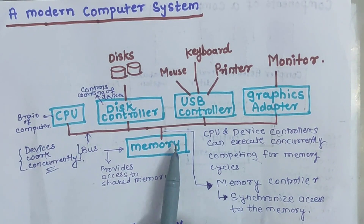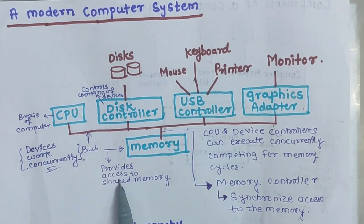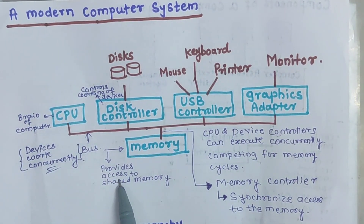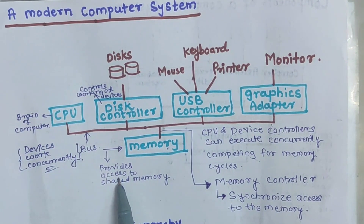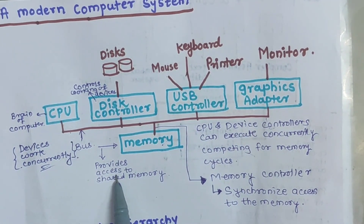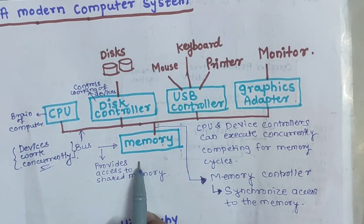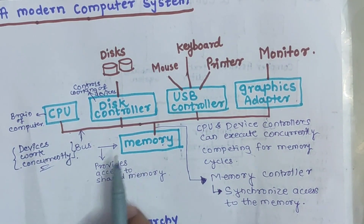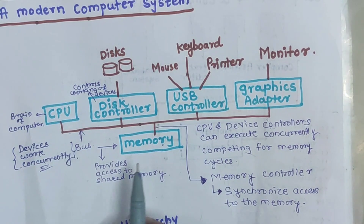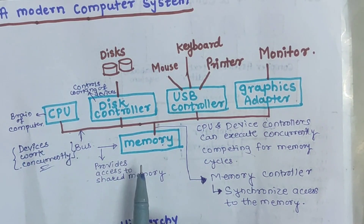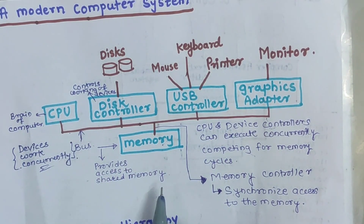The primary memory is a volatile source of memory and the secondary memory is a non-volatile source of memory. Examples of secondary memory are optical disk, magnetic disk, etc. The example of primary memory is RAM — that is, Random Access Memory. The RAM chips are located on the motherboards; there are certain slots on the motherboards where the RAM chips are installed and they act as primary memory.